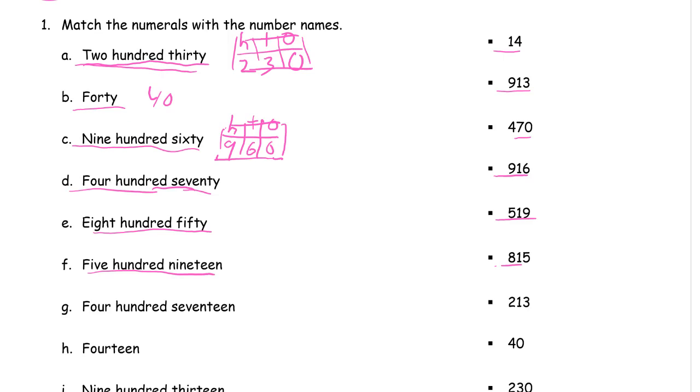470. So we have a four in the hundreds. And then we need 70, which is seven tens. And we have zero ones here.